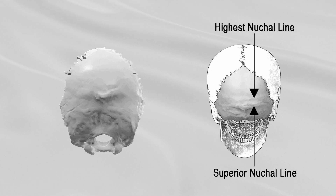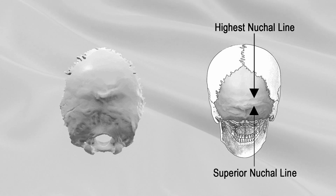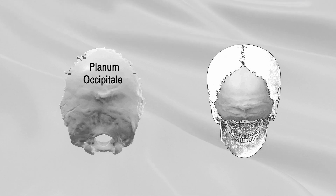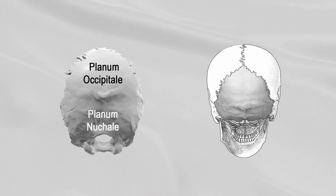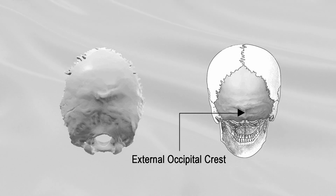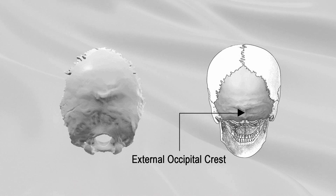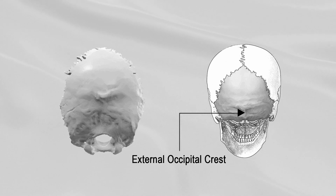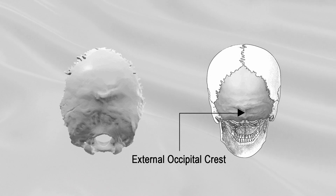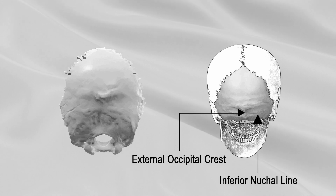That part of the squama which lies above the highest nuchal lines is named the planum occipital, and that below is termed the planum nuchale. The external occipital crest extends from the external occipital protuberance to the foramen magnum. Extending laterally from the middle of this crest on either side is the inferior nuchal line.